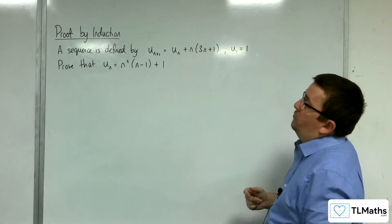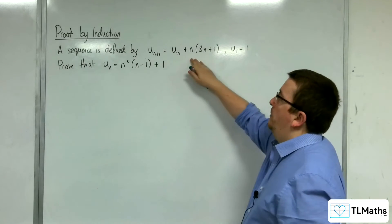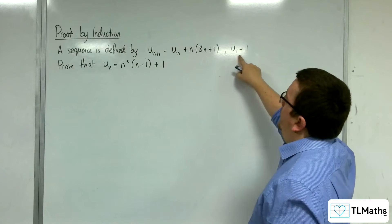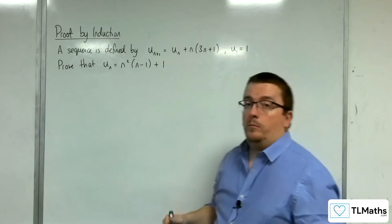In this video we're going to look at this proof by induction. A sequence is defined by u_{n+1} = u_n + n(3n+1), where u_1 = 1. Prove that u_n = n²(n-1) + 1.